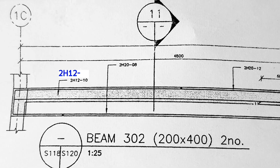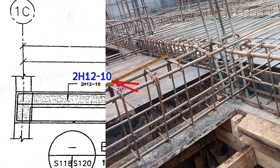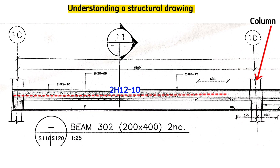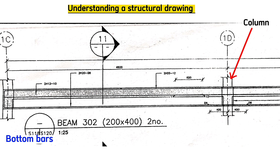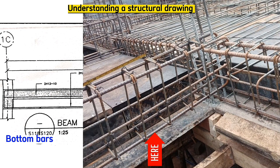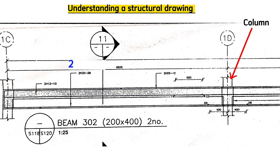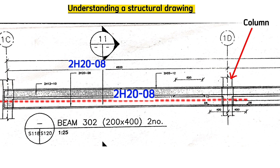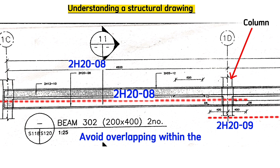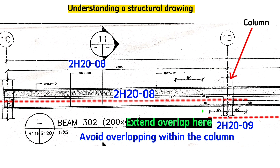For the mid row bars, we have two H12 Code 10 steel bars, which come from this side and stop here. Then the Code 11 bars continue to the extreme end. For bottom bars, we have two H20 Code 8 bars from here to here, and Code 9 bars from here to the extreme end. The overlap is extended to the side to avoid overlapping within the middle of the column.